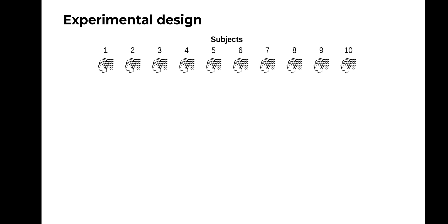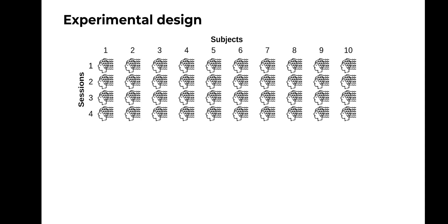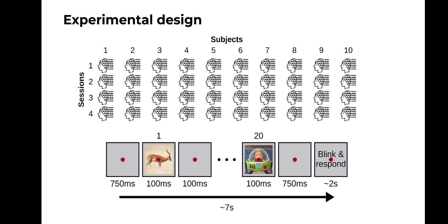We then presented these images to 10 subjects over the course of 4 experimental sessions, while recording their brain responses through EEG. This allowed us to strike a good balance between sampling different subjects and sampling visual variation within single subjects. To maximize the amount of image trials presented during the 4 experimental sessions, while at the same time ensuring that subjects paid attention, we used a rapid serial visual presentation paradigm, in short RSVP, combined with a target detection task.